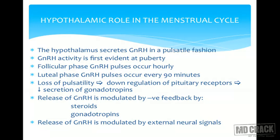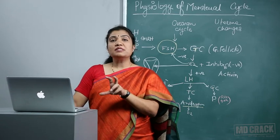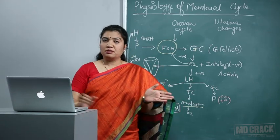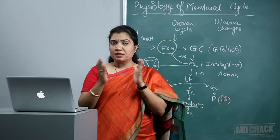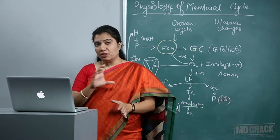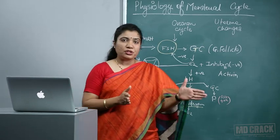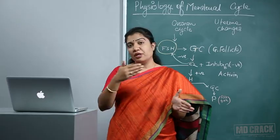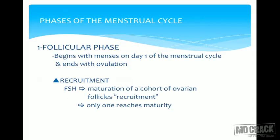Ovulation divides the menstrual cycle into the early follicular phase, late follicular phase, ovulatory phase, and after ovulation the luteal phase. In the uterus, until ovulation it is the proliferative phase with endometrium proliferating, and once the corpus luteum forms, the second half is called the secretory phase.